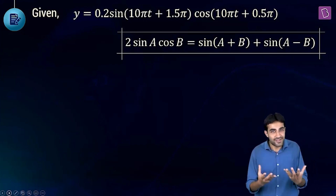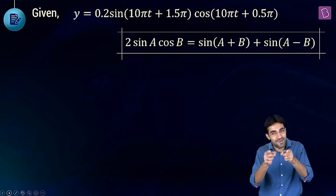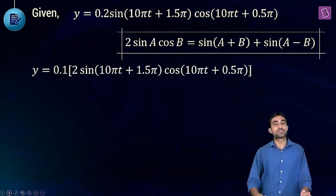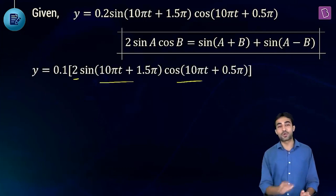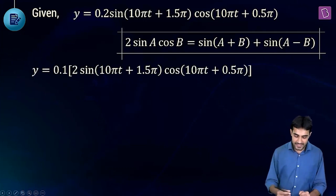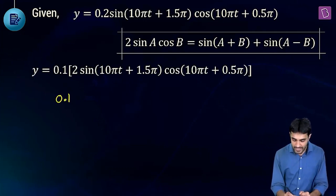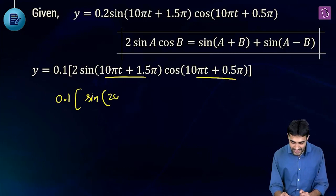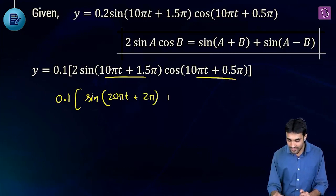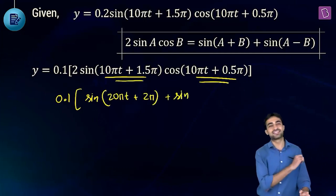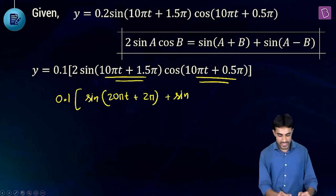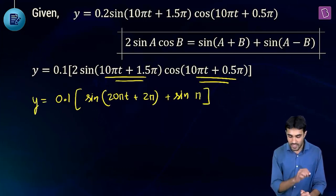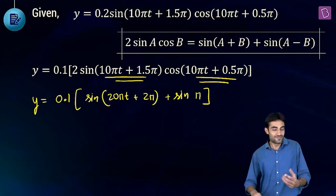Remember this trigonometric identity — if you don't, memorize it now. Let's apply it. We rewrite our equation so we can see twice of sine of something times cosine of something. We get 0.1 times [sin(20πt + 2π) + sin(π)]. Since 10πt cancels out in the second term, we get just sine of π, which is 0.